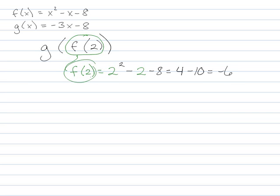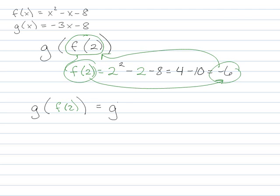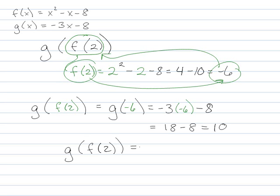So since f of 2 is negative 6, that means I can replace f of 2 with negative 6 anytime that I want. So g of f of 2 is the same thing as g of negative 6. So I could say that everywhere now, I'm going to use the g function. Everywhere I see an x, I'm going to put a negative 6. And that's going to give me 18 minus 8 is going to give me 10. So I can say that g of f of 2 is 10.